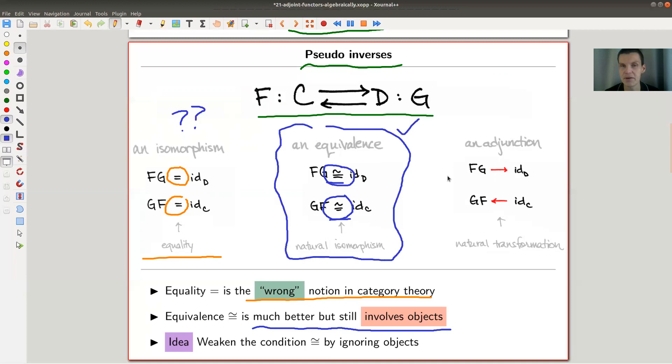And instead of having any equivalence between them, you just have a map. So kind of, you're weakening the condition by ignoring the objects in some sense completely, and I will make this precise in a second, right? So this is the adjunction.